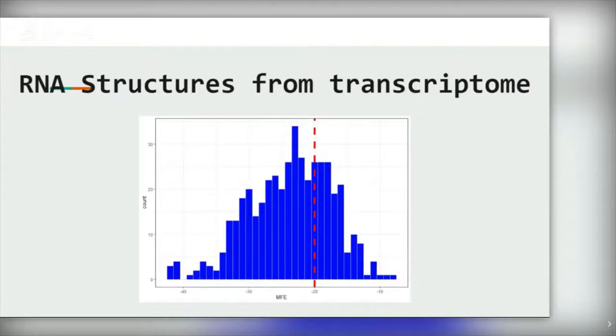We used the cutoff of minus 20 to filter out less stable structures, and we got roughly 300 predicted secondary structures that were used for further analysis.